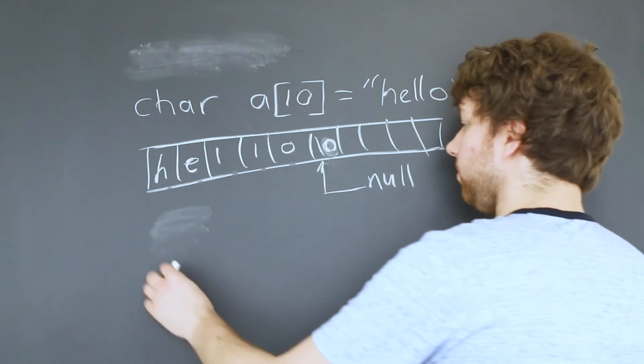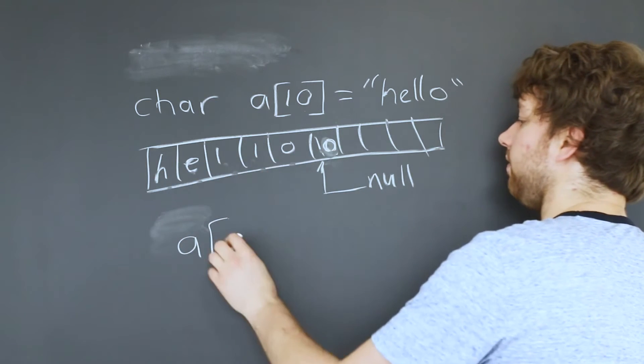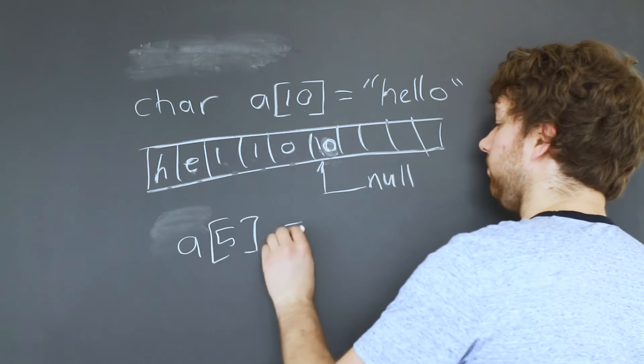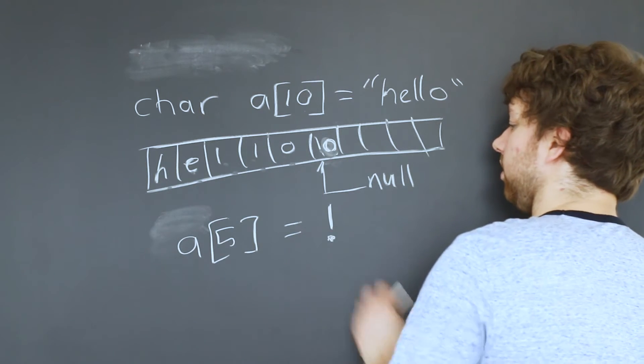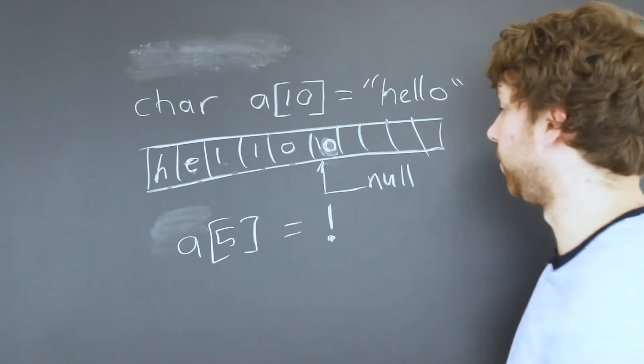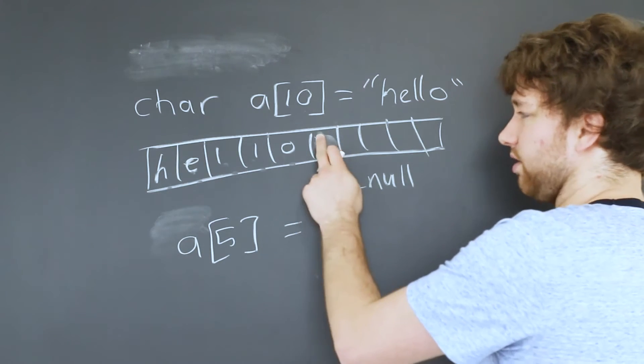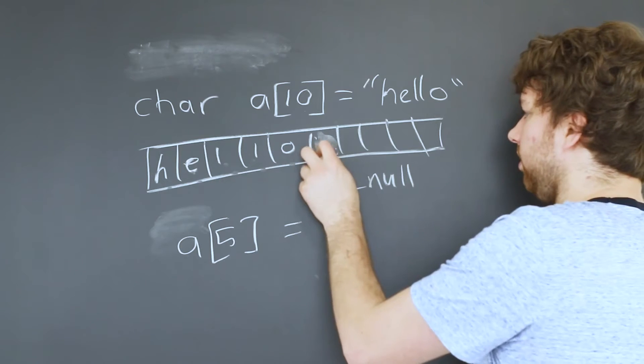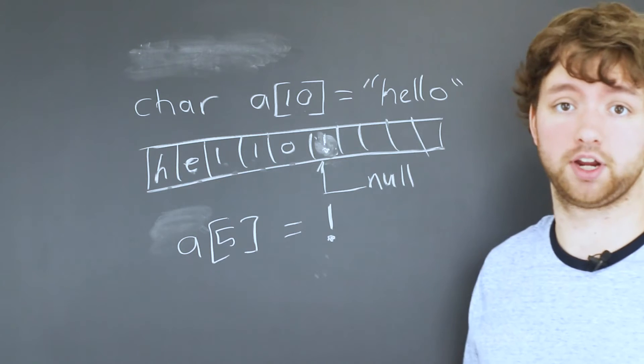So for example, if you did something like this, zero, one, two, three, four, five, and set that equal to exclamation mark, that's an issue because what we just did is we overwrote this. And we replaced it with an exclamation mark. So now there's no way to tell the end of the string.